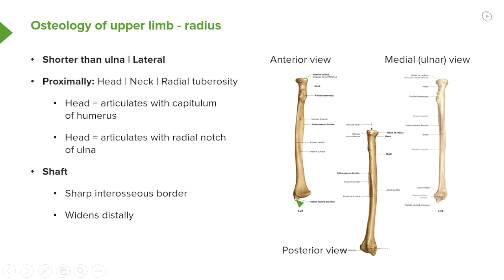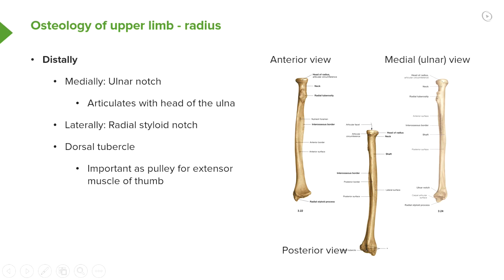We have a radial styloid process that can be palpated on the lateral aspect of the radius. Looking at the distal end of the radius, we can see an ulnar notch, which allows articulation with the head of the ulna. This is clearly visible on the medial or ulnar view.